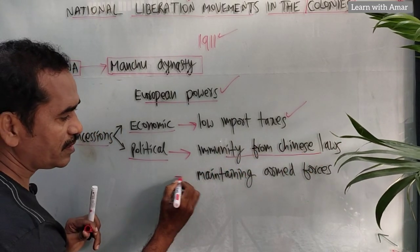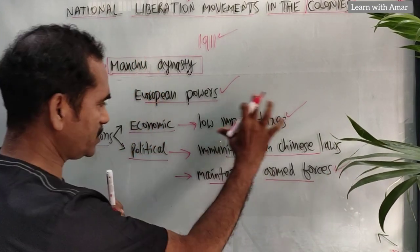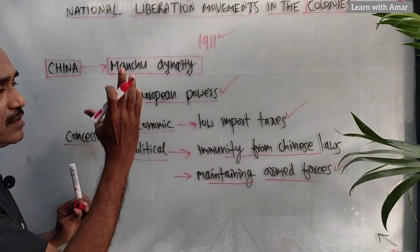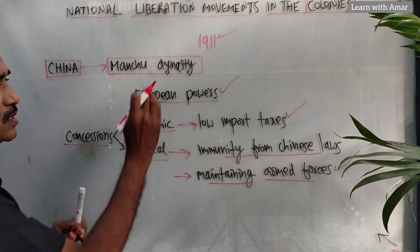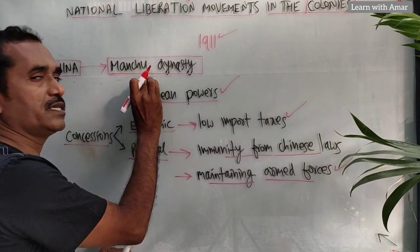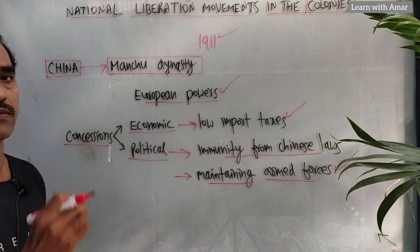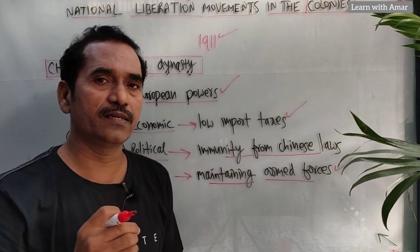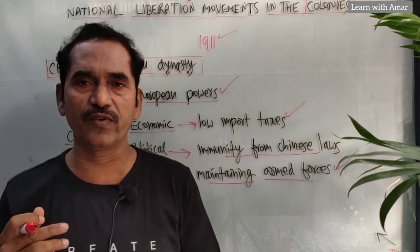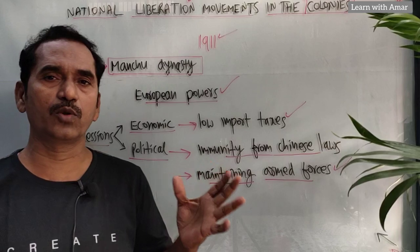They were also allowed to maintain armed forces. So these activities we see in China up to 1911. The Manchu dynasty became very weak and European powers became very strong. The common people in China were very unhappy with this situation. So what happened in the year 1911? Some struggles took place.